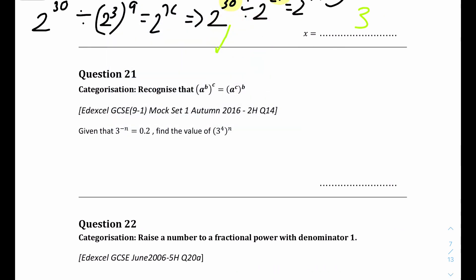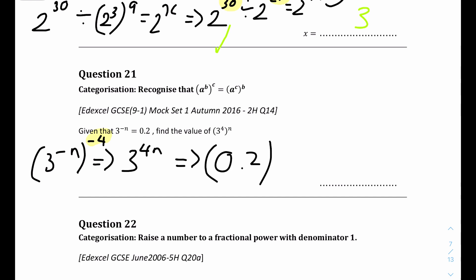Question 21: given that 3 to the power of minus n equals 0.2, find the value of 3 to the power of 4n. To get from minus n to 4n, multiply the power by minus 4. So we apply a power of minus 4 to both sides: 0.2 to the power of minus 4, which equals 1 over 0.2 to the 4. Typing that into a calculator gives 625. The answer is 625.